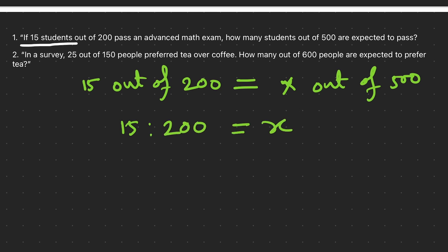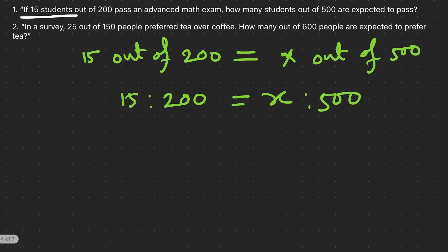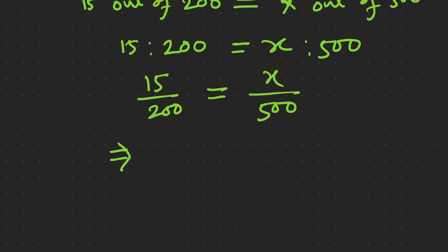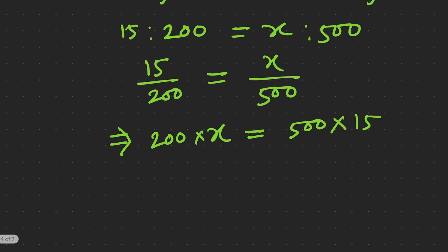Now we can write 15 is to 200 and x is to 500. It represents a ratio, or we can simply write 15 divided by 200 equals x divided by 500. Then we can solve these issues. As we already know how to multiply, we can multiply: 200 times x equals 500 times 15.